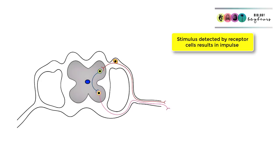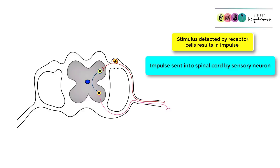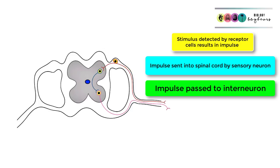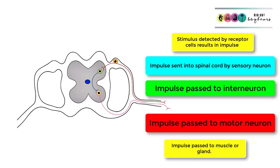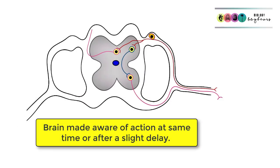Let's go through the whole process. A stimulus is detected by receptor cells, resulting in an electrical impulse sent into the spinal cord via a sensory neuron through the dorsal root. Within the spinal cord, the impulse is passed to an interneuron, which passes it to the front of the spinal cord to a motor neuron. The impulse leaves via the ventral root, reaches an effector such as a muscle or gland, and results in some type of action. The brain is made aware either at the same time or after a slight delay.